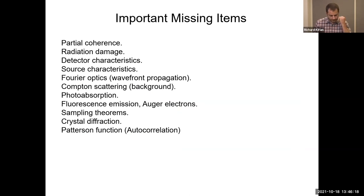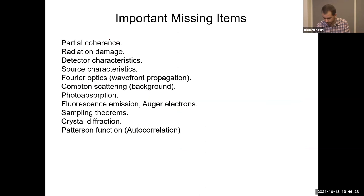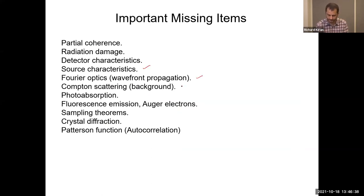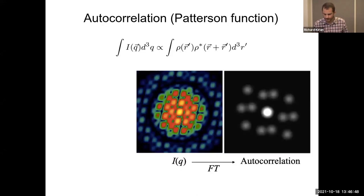I have about five minutes. A list of things I didn't cover: partial coherence, radiation damage, characteristics of detectors and sources, Fourier optics and wavefront propagation, Compton scattering, photo absorption, fluorescence, sampling theorems, crystal diffraction, and the autocorrelation function. I'm going to say one thing about the autocorrelation function.